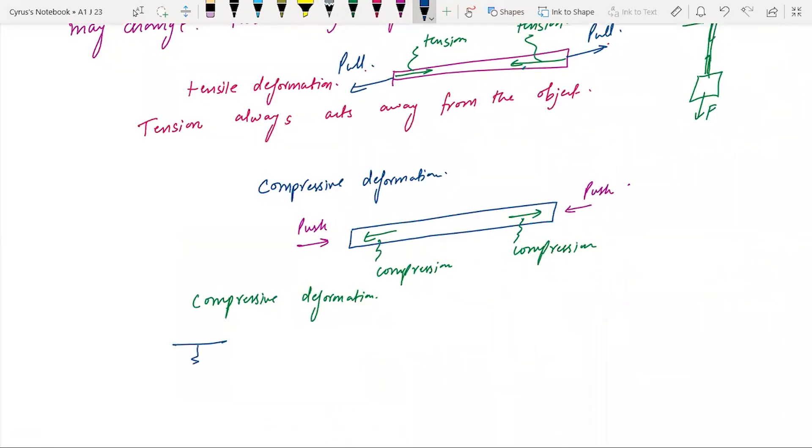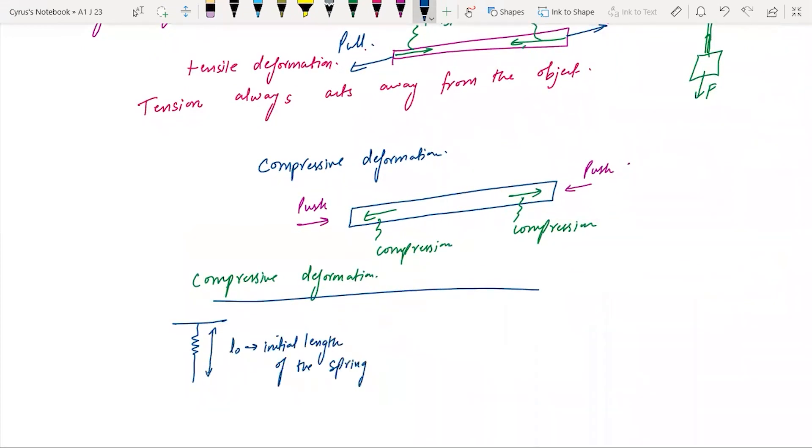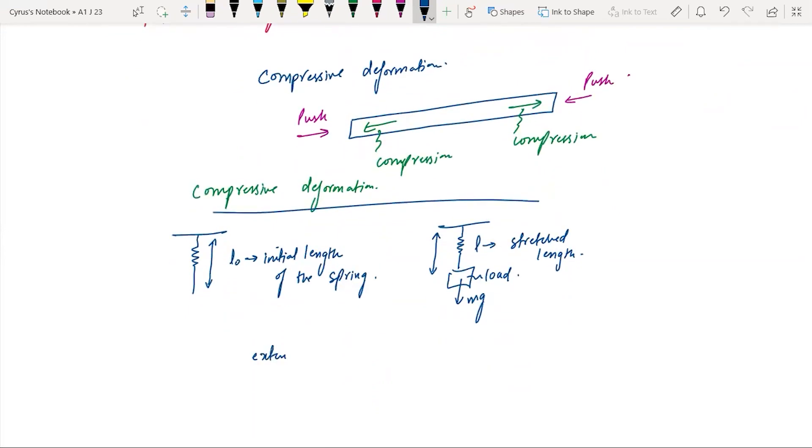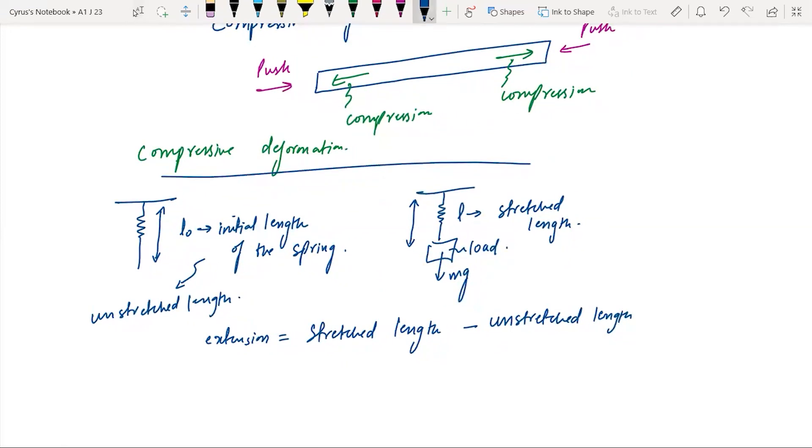For example, you attach a load with this spring. You will attach a load here. This is the load that we have, the weight is mg. We have here stretched length. Extension is given by stretched length minus unstretched length. We can write here the stretched length is given by L minus L naught, or we can also write x equals L minus L naught.